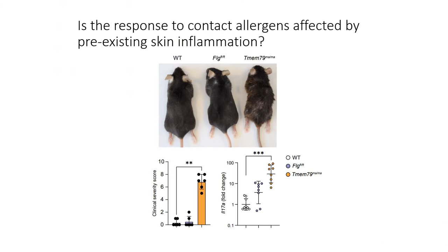To investigate this, we used filaggrin-deficient mice and matrin-deficient mice. Both mouse strains have a defect in the skin barrier, and in addition, the matrin-deficient mice spontaneously develop an IL-17-driven skin inflammation.